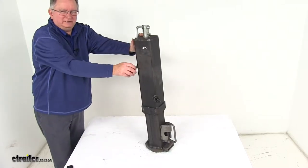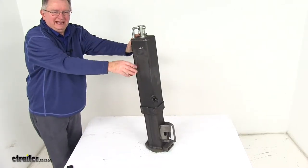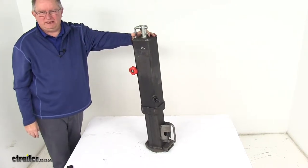Today we're going to take a look at the RAM Square Topline Gooseneck Coupler. It has 6 inches of height adjustment and a 30,000 pound weight capacity.